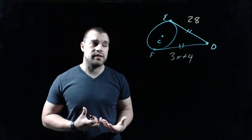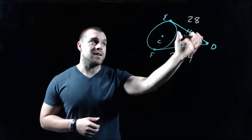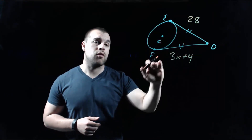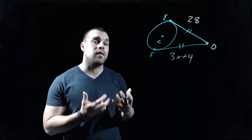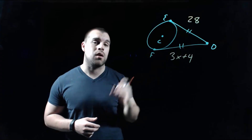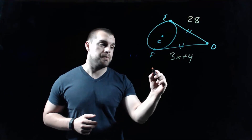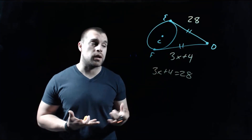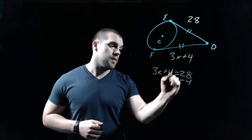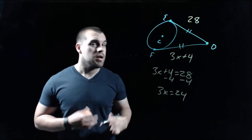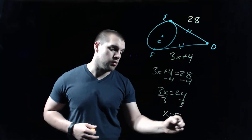Using that property: we have two tangents both extending from point D. The length of ED is 28 and the length of FD is 3x + 4. Since these two tangents are congruent, we set them equal: 28 = 3x + 4. Subtracting 4 from both sides gives 3x = 24. Dividing by 3, we get x = 8.